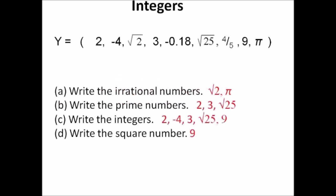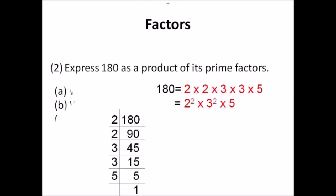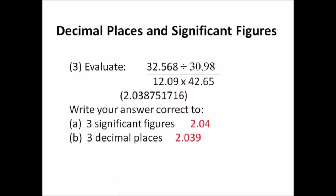Answers for number one: the irrational numbers are root 2 and pi. The prime numbers are 2, 3, and 5. The integers include root 25 equals 5, so that's why it's also a prime number and an integer. The square number is 9 only. Number two: 180 equals 2 times 2 times 3 times 3 times 5, or 2² times 3² times 5. Number three: the calculator gives 2.038751716. To three significant figures: 2.04. To three decimal places: 2.039.